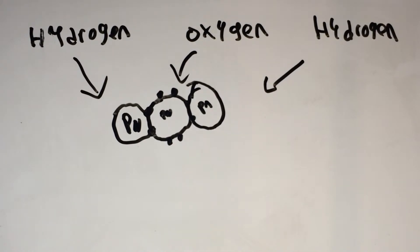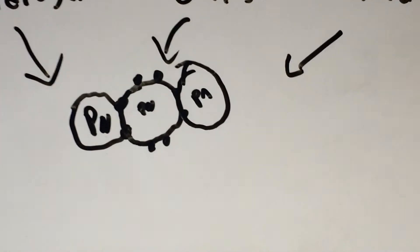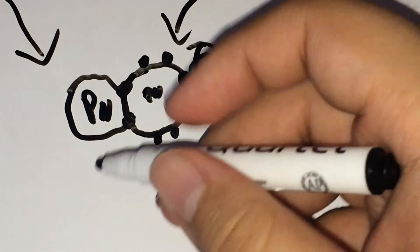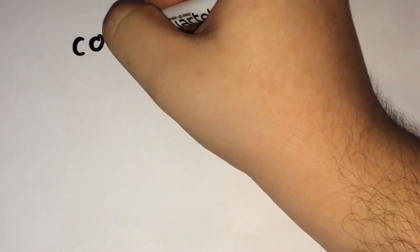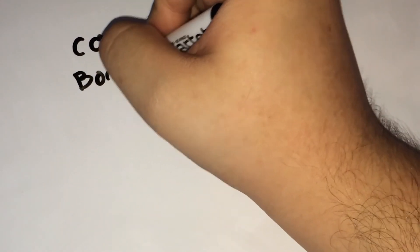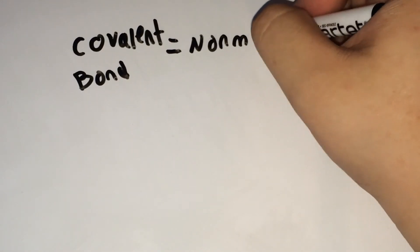At this point, hydrogen is stable, but oxygen isn't, so we can add another hydrogen to oxygen. Now, oxygen has eight electrons in its outermost shell. In case you didn't see this coming, well then, fun fact, this is a water molecule, H2O. By the way, covalent bonds only work between non-metals.